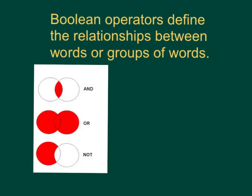When using a Boolean operator, it defines a relationship between the words or the group of words, and this can really help you narrow down a search or broaden it even wider. When using AND in between your two words, you only receive pages including both of those terms, not necessarily right next to each other. So if you put rock and roll into Google and press go, you would get both terms, but not necessarily rock and roll as in music.